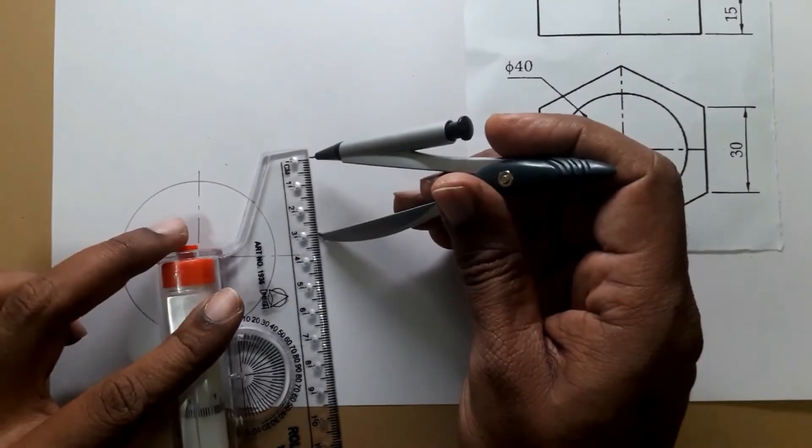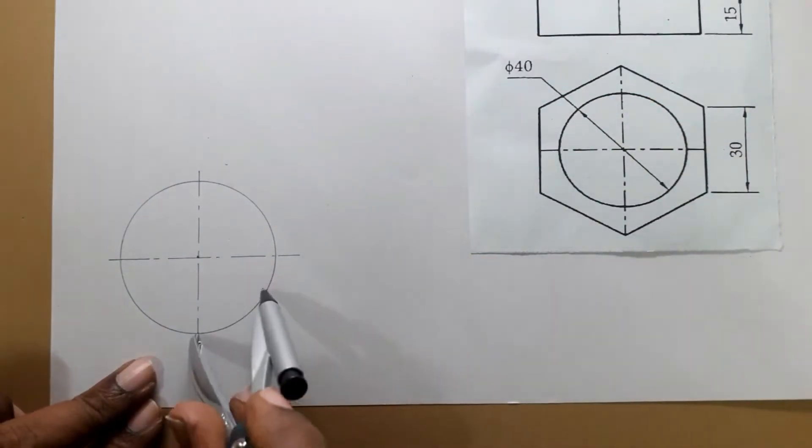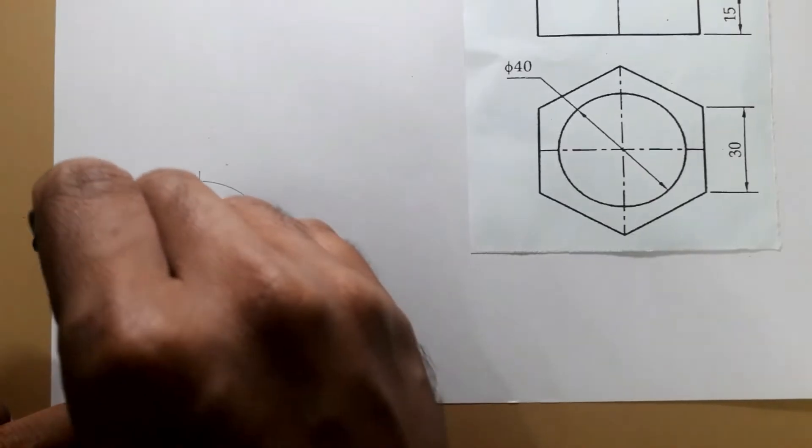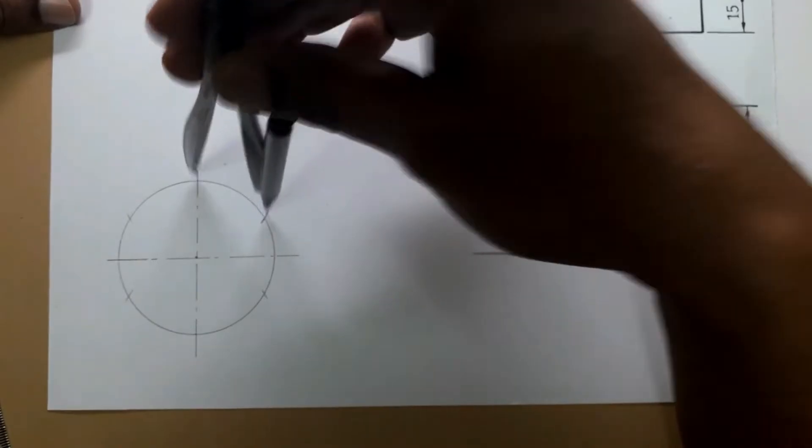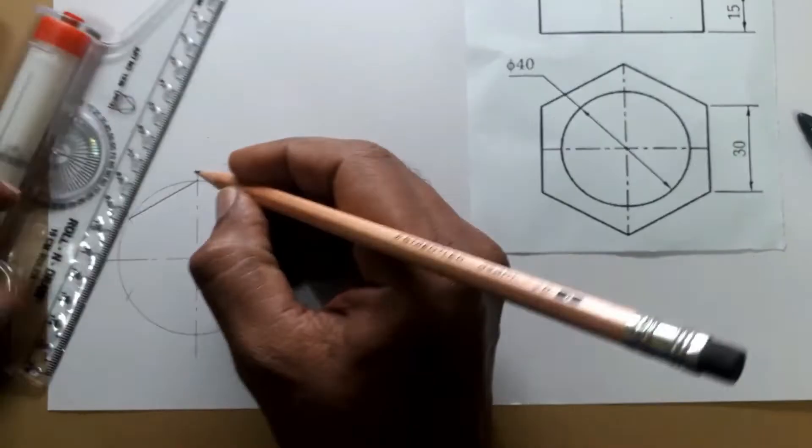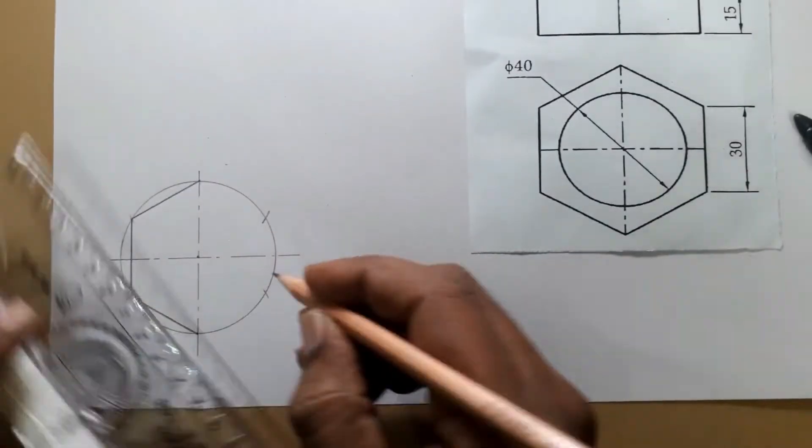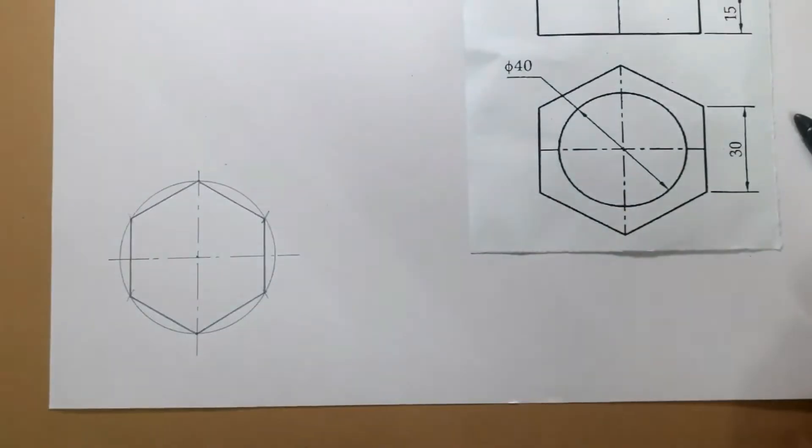Same distance, 30 mm. This point is the center of the circle. We will cut the arc on both sides. Next, from this point cut the arc. We will join all the points using the line. Now the hexagon is complete.